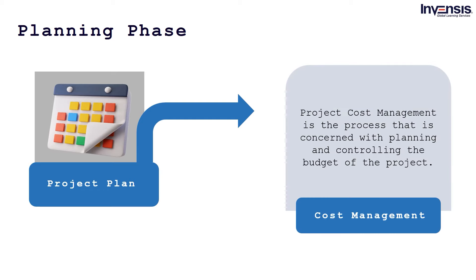Project cost management is the process concerned with planning and controlling the budget of the project. This process includes activities such as planning, budgeting, estimating, financing, funding, managing, and monitoring costs to make sure the project is finished within the scheduled budget. This phase covers and tracks the project's total expenditure against the actual budget to make sure the project is moving on track and within the fixed budget.